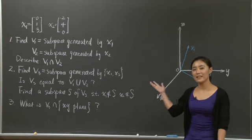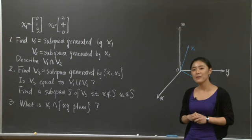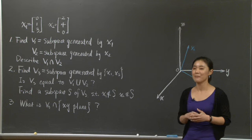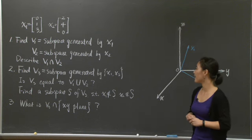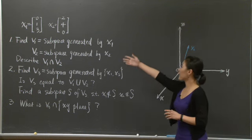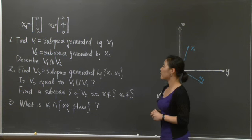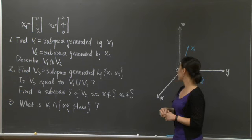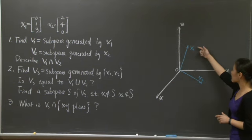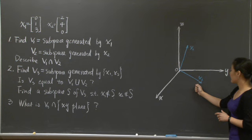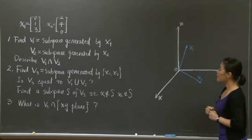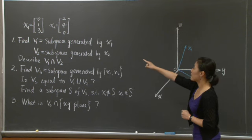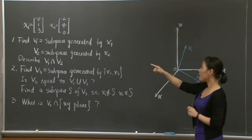Today, we're going to look at this example to review these two important properties of linear space and subspace. I have two vectors, x1 and x2, both of them are vectors in R3. As you can see, I've drawn them here. This is x1 and this is x2. First, we want to find the subspace generated by x1, which I call v1.